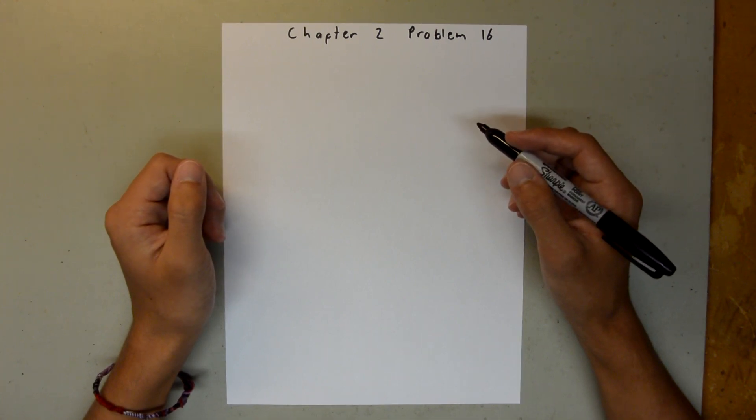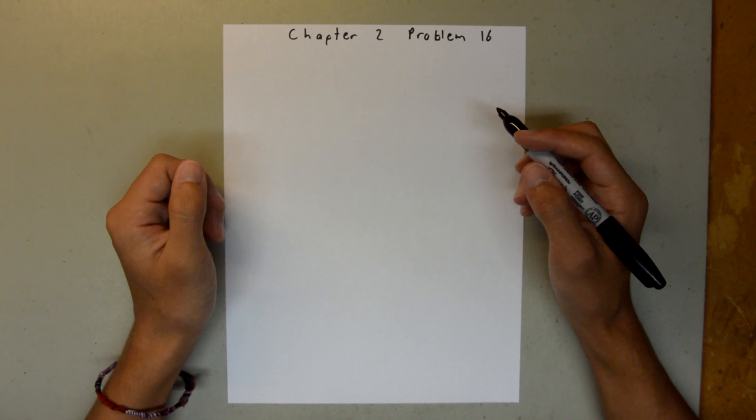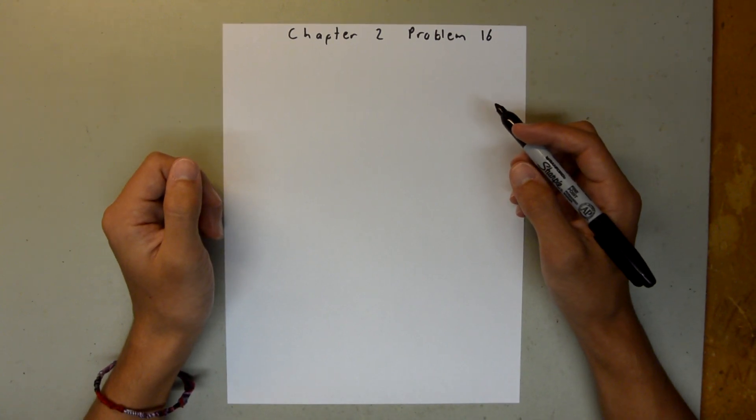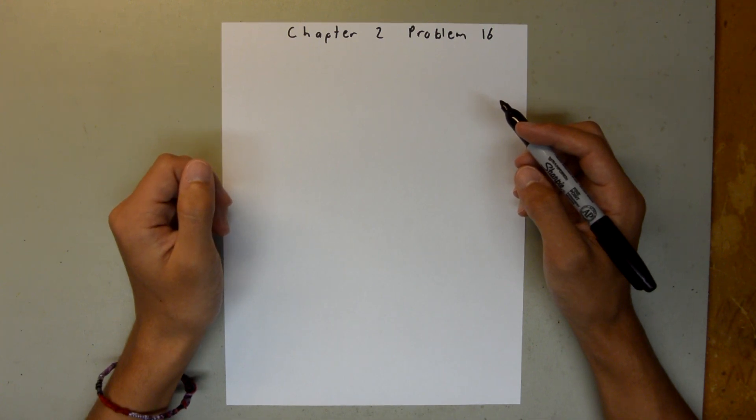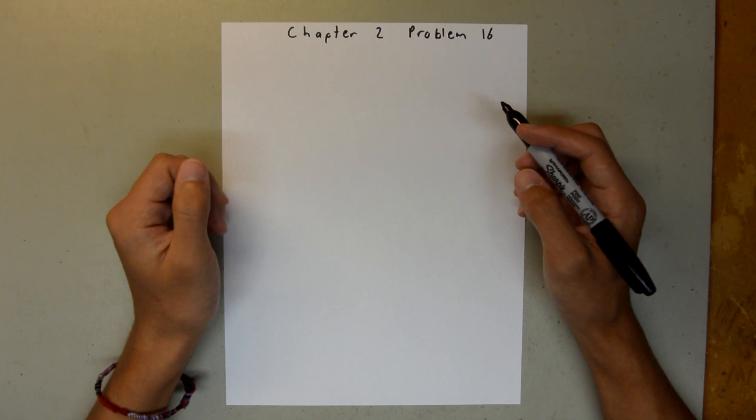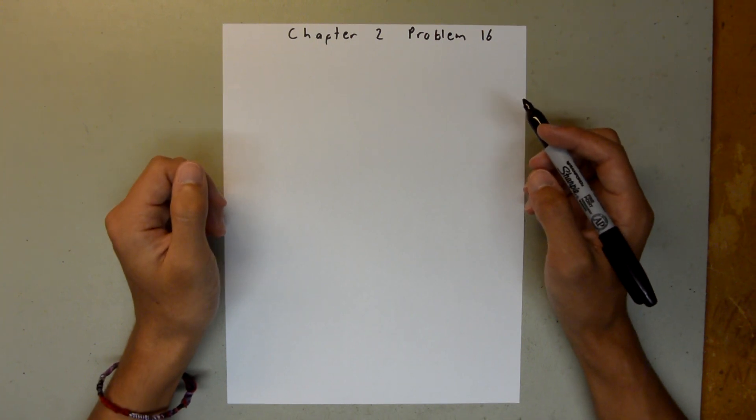Chapter 2 is all about motion along a straight line, and in Problem 16, we're talking about an electron moving horizontally. We're given the position equation, and we're asked to find how far the particle is from the origin when it comes to a stop.